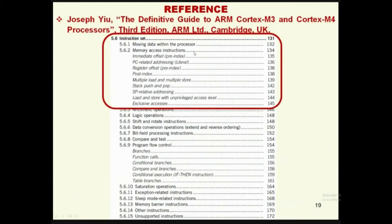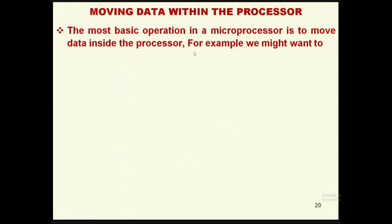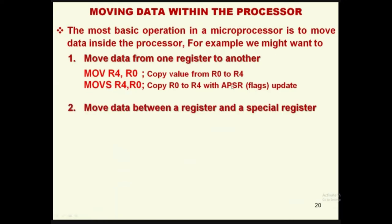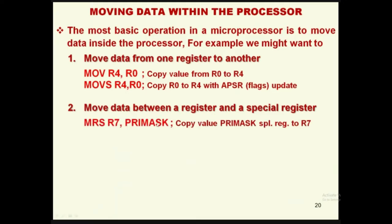Moving data within the processor is the most basic operation in a microprocessor. For example, you might want to move the data from one register to another. One example is MOV R4, R0 — meaning copy the value of R0 to R4. When moving with flags also needing to be updated, we can add the suffix S. Between one register and another register, and also between a register and a special register — for example, moving the PRIMASK register content to register R7.